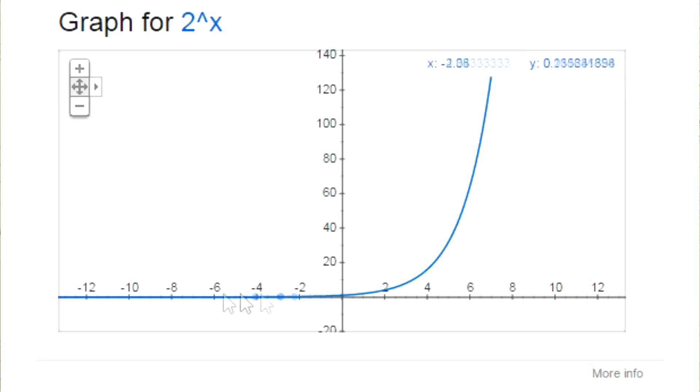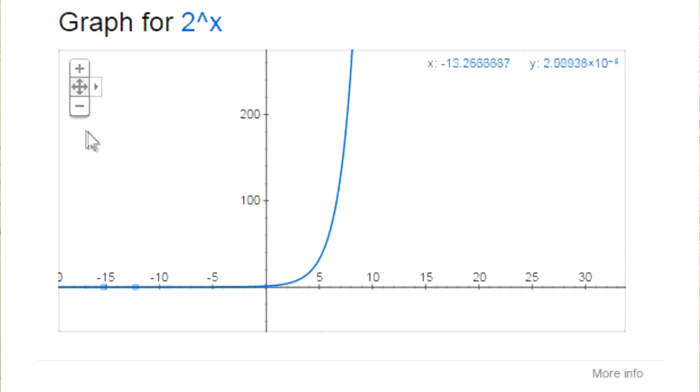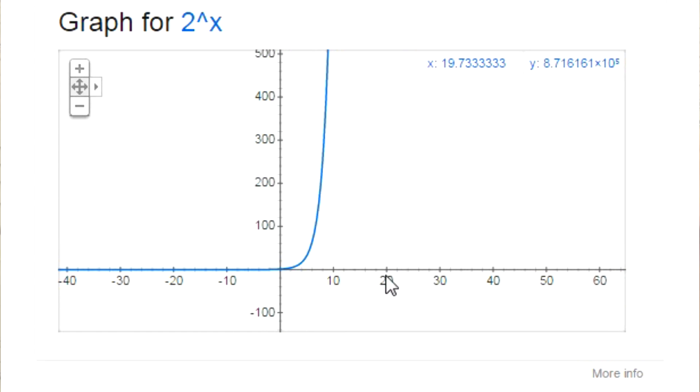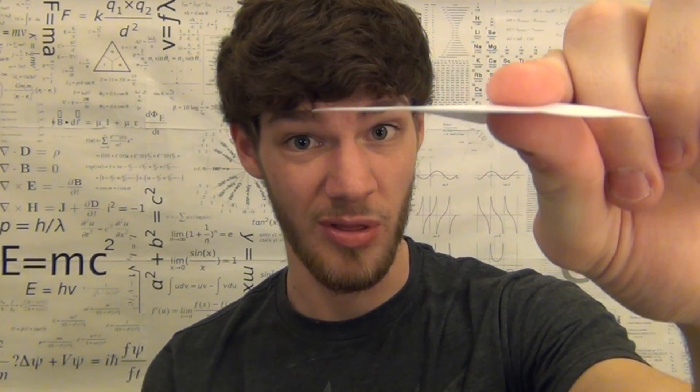Now we can look at a simple exponential graph that shows just how fast 2 to the power of X increases. That means if you fold a piece of paper 20 times, you're over 1 million times thicker than what you started with.